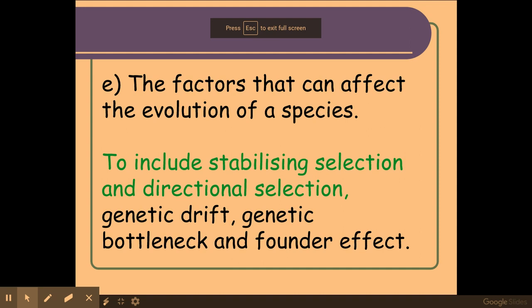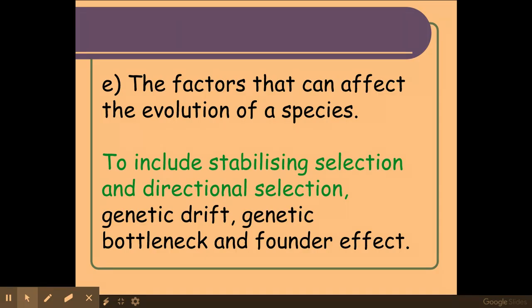Welcome biologists. In this session we'll be finishing off the specification point looking at the factors that can affect evolution of a species. In this video we're going to have a look at genetic drift, genetic bottleneck and the founder effect. The bits in green we had a look at in part one.